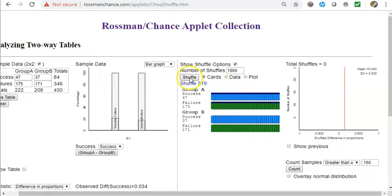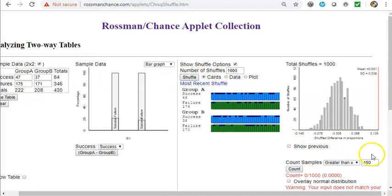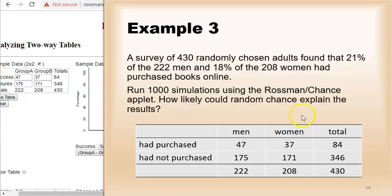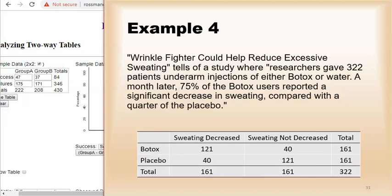I'm going to run a thousand simulations and count the samples greater than or equal to 0.034. It comes out to be about 24%. So likely, the explanation is that these results are just random chance. About 24%, 25%, that could very well be random chance.